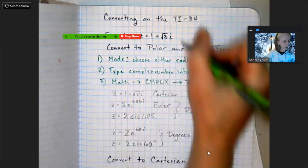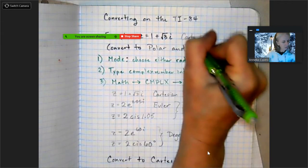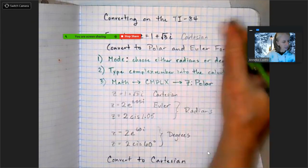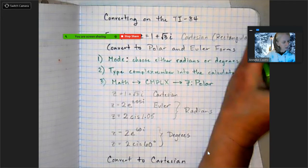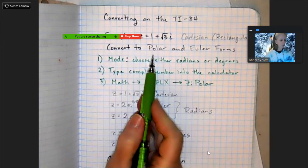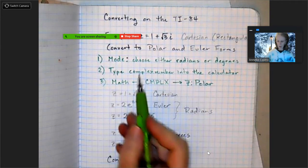Here I am in Cartesian form, so this is Cartesian, also known as rectangular form, and we're going to convert it to polar or Euler form.